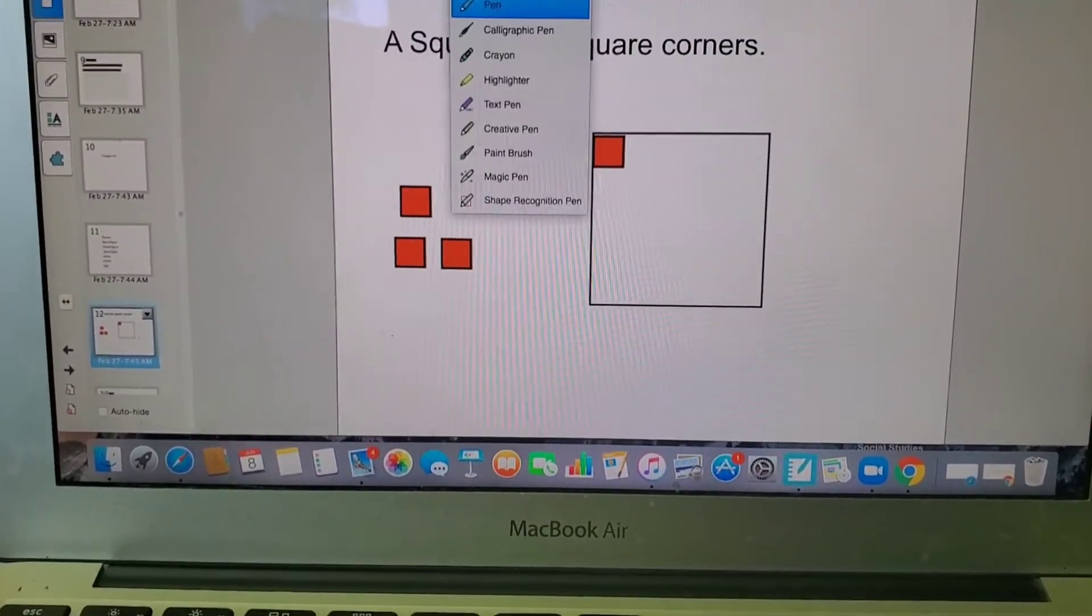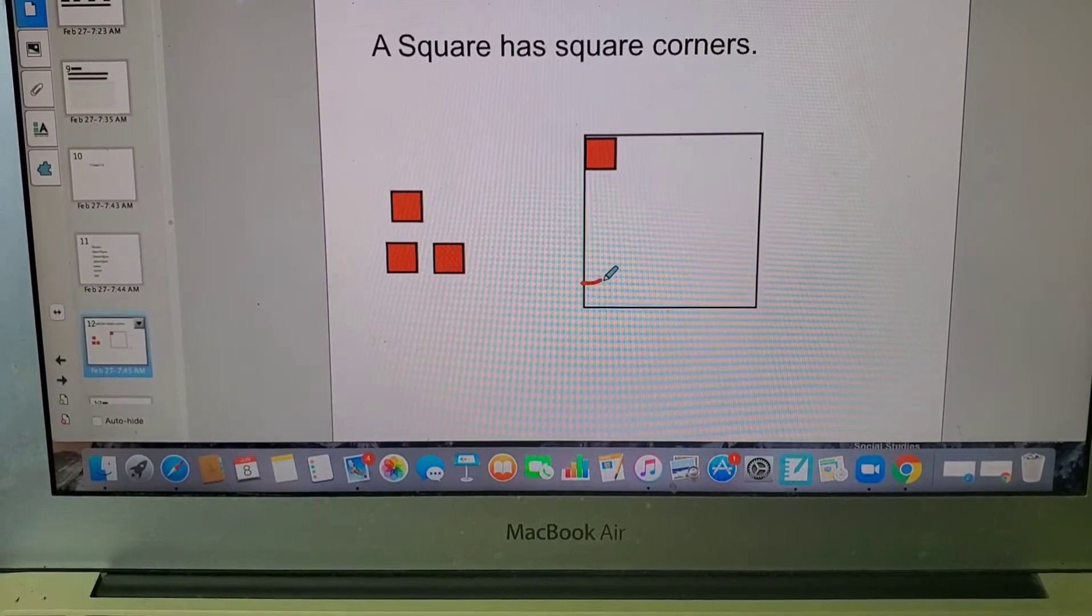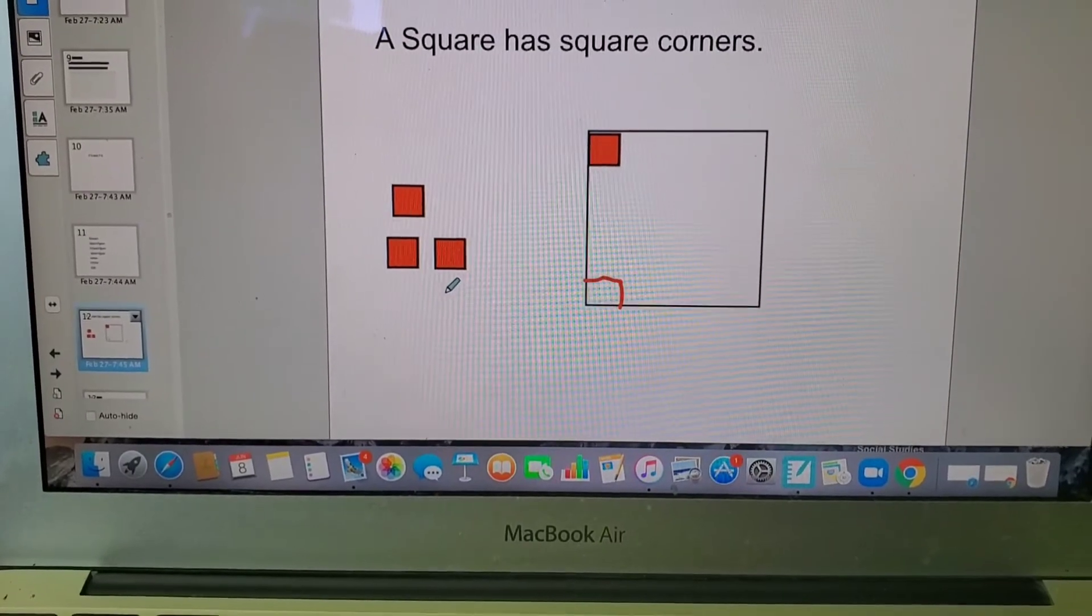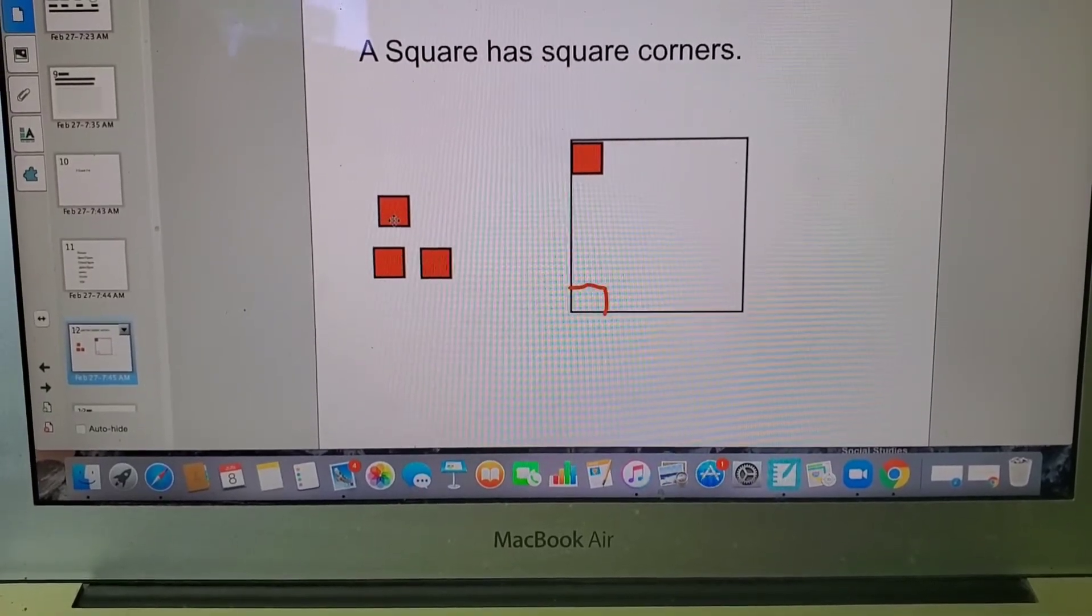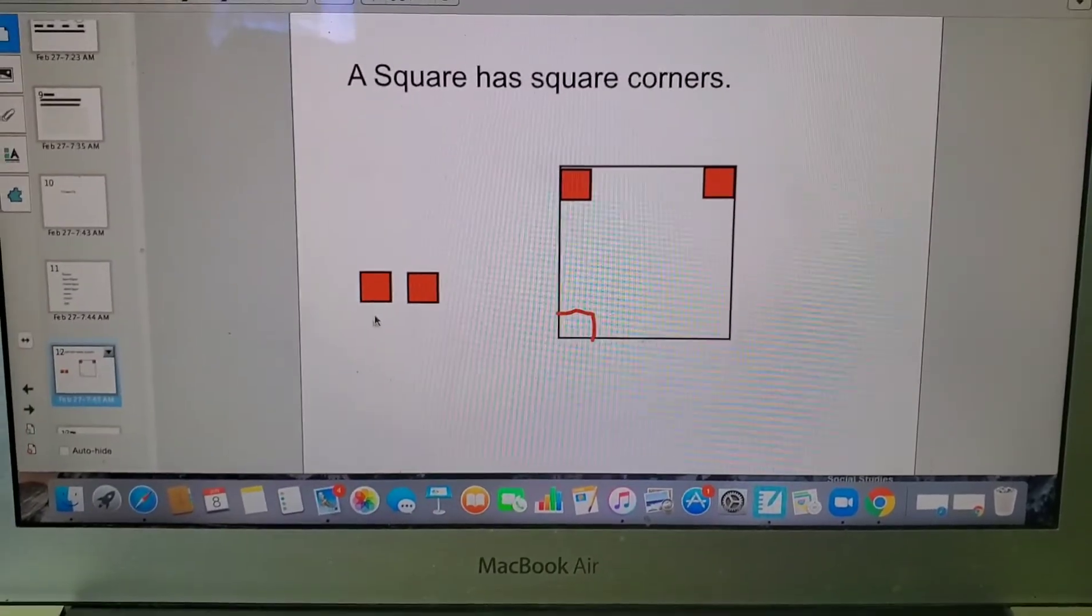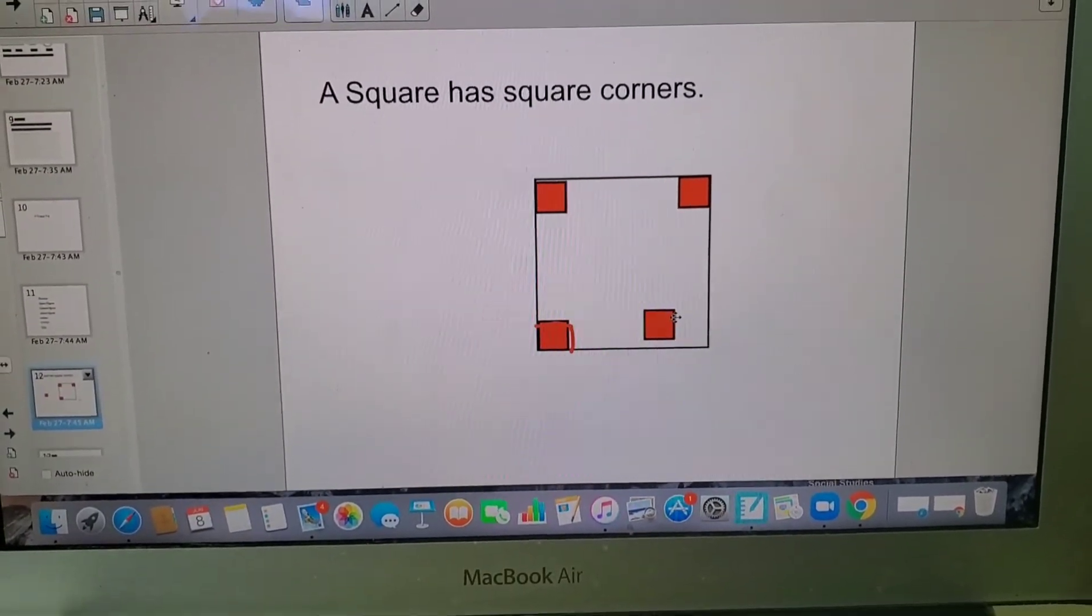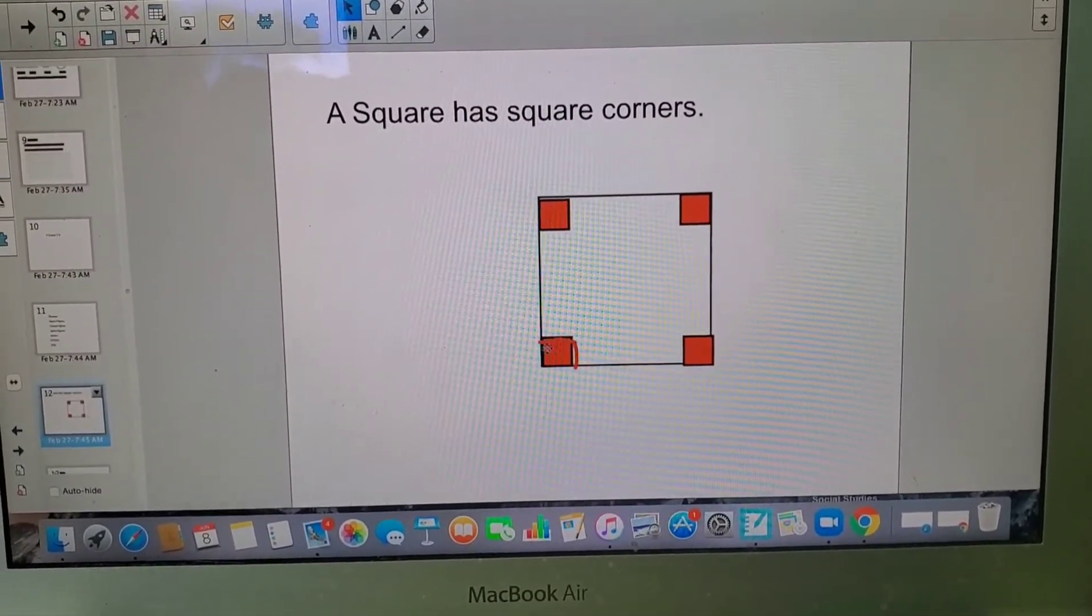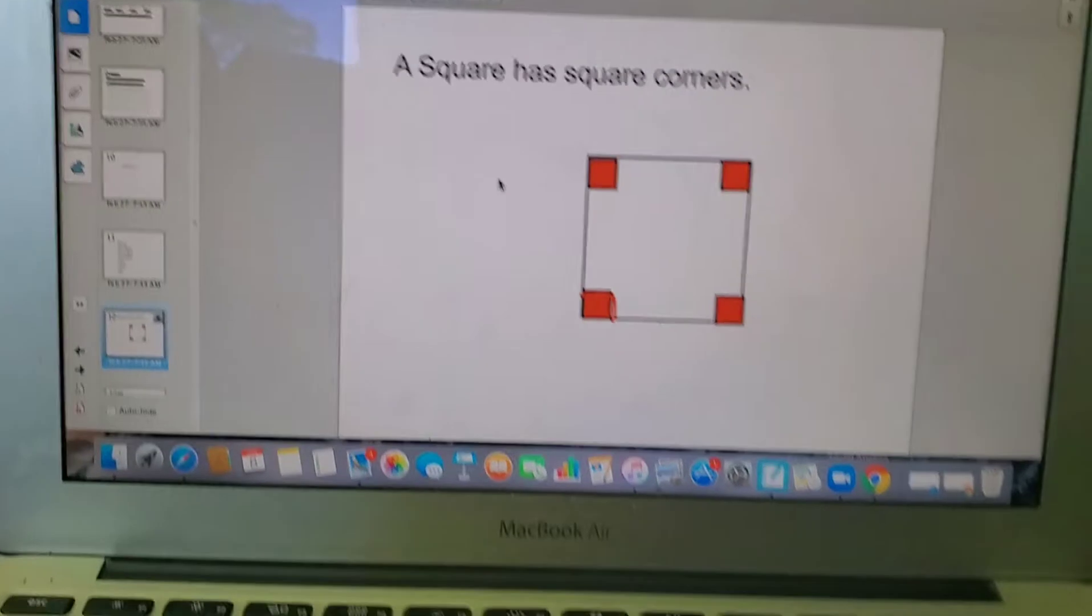Or you can draw a square. If you can draw a square in the corner, you know—I drew that right—this square is a little funny, but if you can draw a square in the corner, that means it has a square corner. So how many square corners does a square have? Let's count them: one, two, three, four. So a square has four corners and they're all square corners.